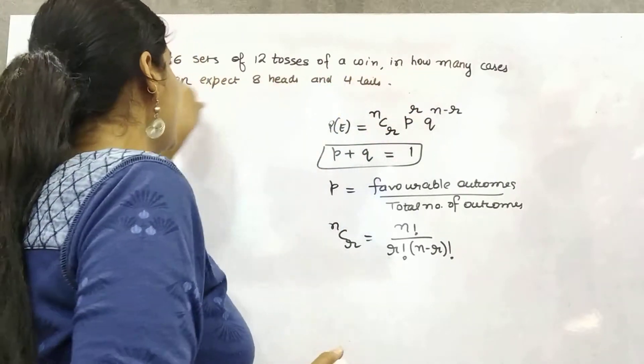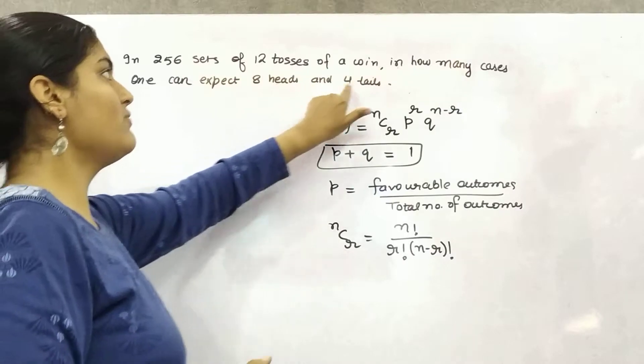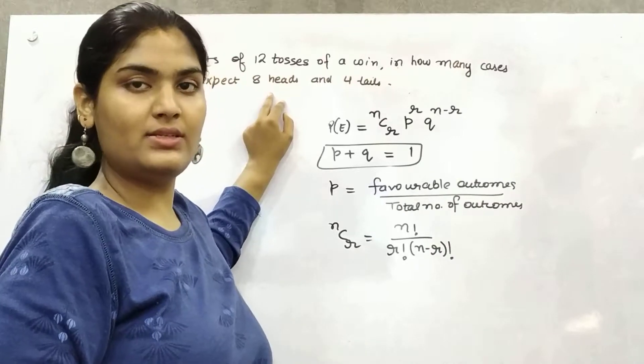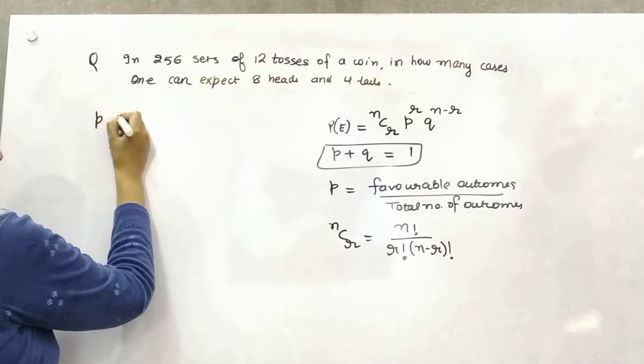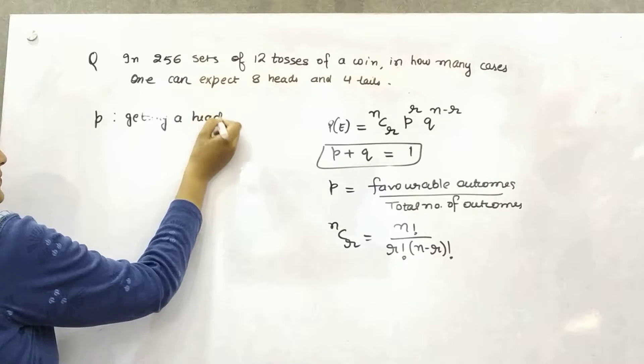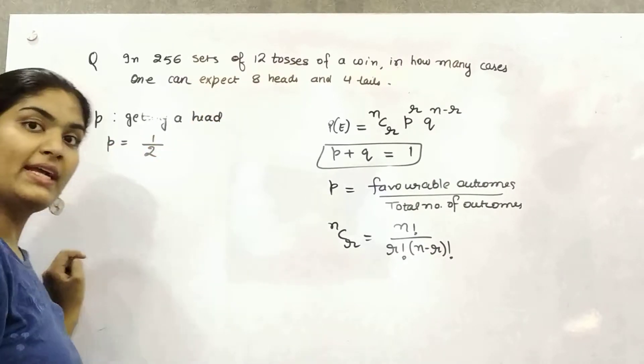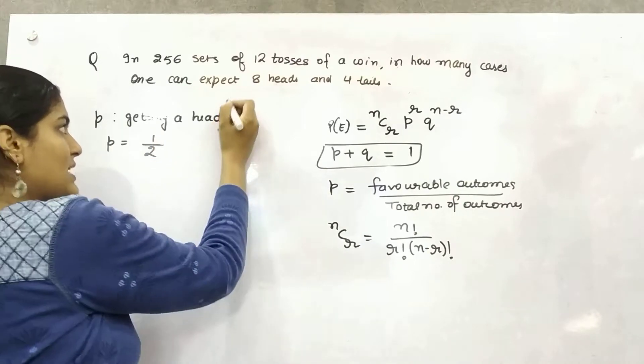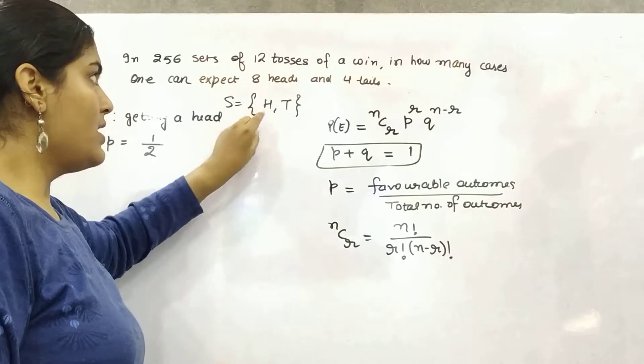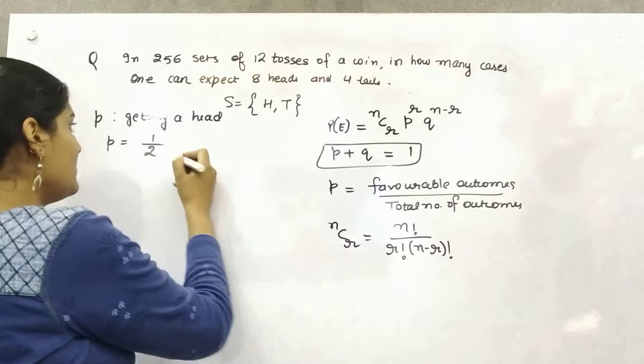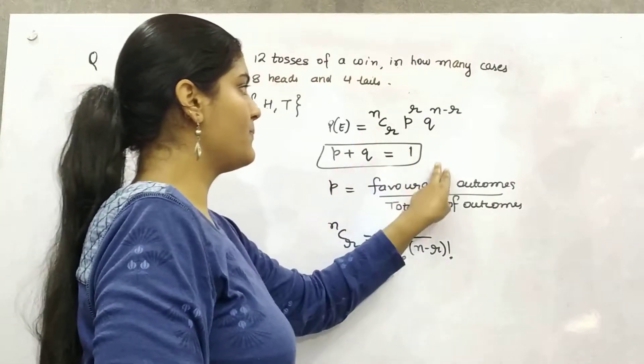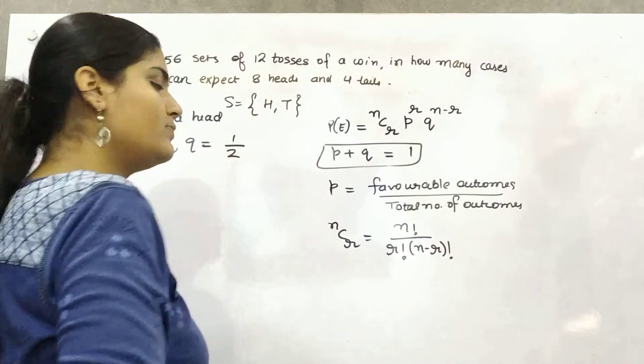Now it is asking how many cases one can expect eight heads and four tails. Because there are more number of heads, let's say our success event is getting a head. So probability of getting a head will be 1 by 2 because the sample space will be either head or tail when you toss a coin. Similarly, getting a tail is also 1 by 2.